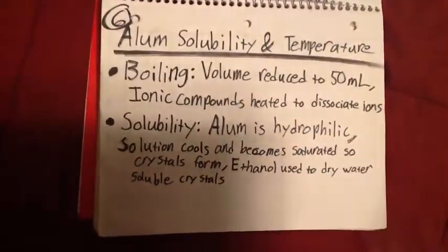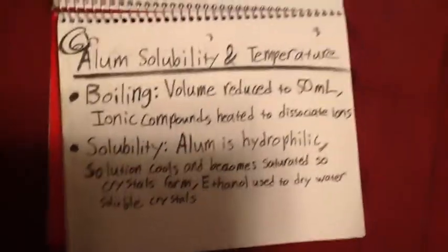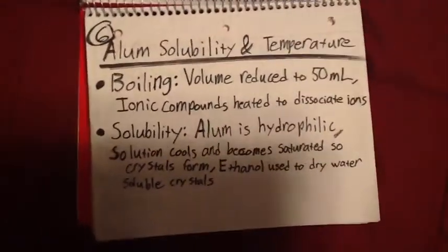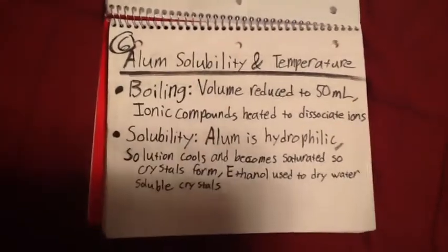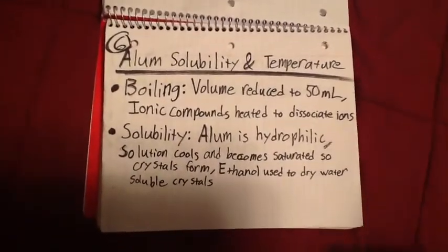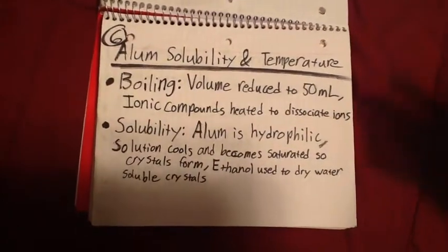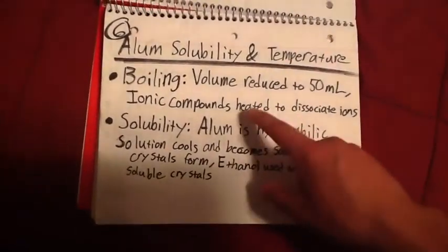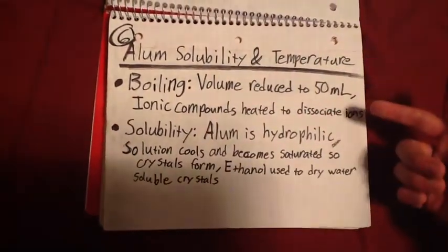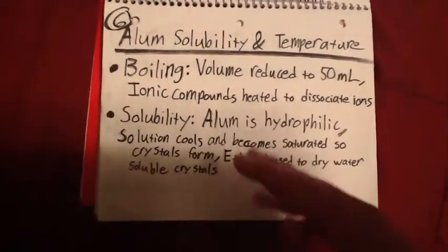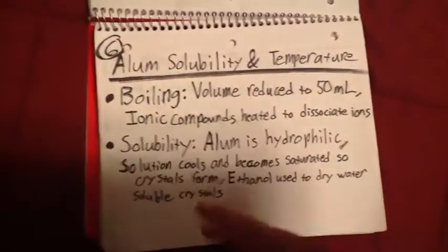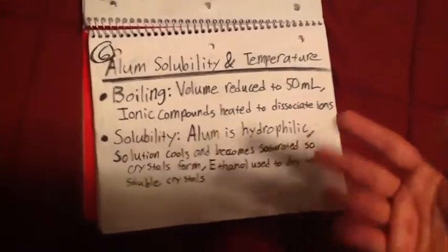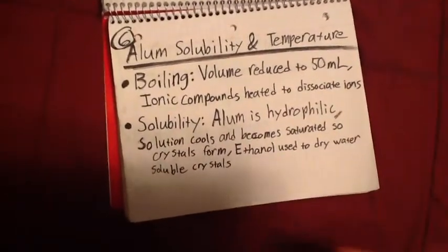Moving on, question six is asking us how solubility and temperatures were used in our experiment. In step eight of our experiment, we boiled off our solution to create the alum crystals. It was boiled down and reduced to a volume of 50 milliliters, where the heat allowed the ionic compounds to dissociate and allowed the alum to form as the ions were creating the solution.